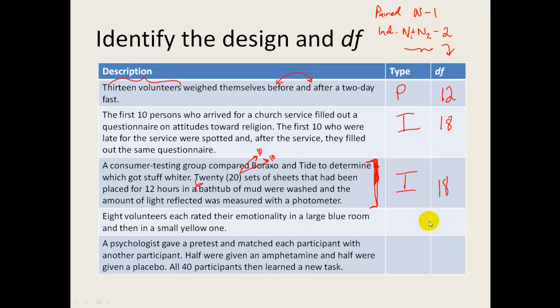Eight volunteers rated their emotionality in a large blue room and then in a small yellow one. So this is definitely a paired design. Gives it away because it's the same volunteers in both rooms. So eight minus one is seven. The psychologist gave a pretest and matched. Ooh, there's a key word. Matched each participant with another participant. Half were given amphetamine and half were given a placebo. All 40 participants then learned a new task. And I'm going to make the assumption here that they were also given some sort of a post-test. So the idea being that they're matched off the pretest. So let's say participant one and participant seven on the pretest scored a six out of ten. That's why they were matched together is because they were similar prior to any sort of treatment.